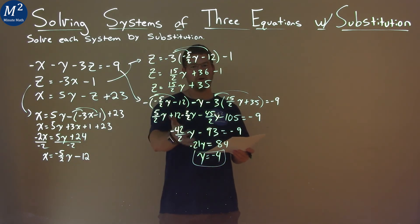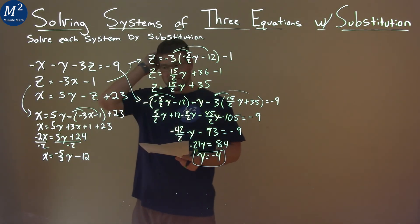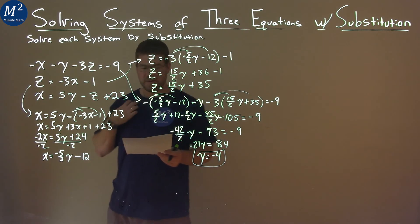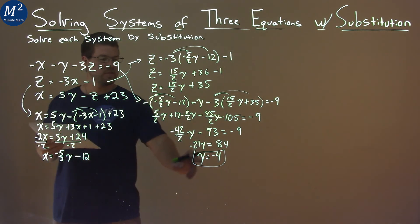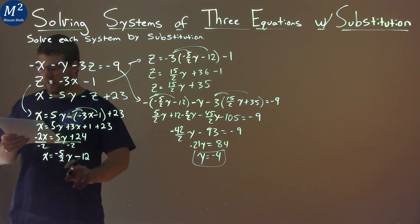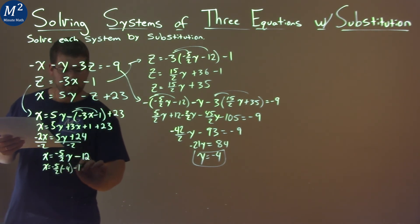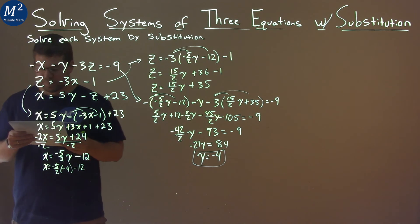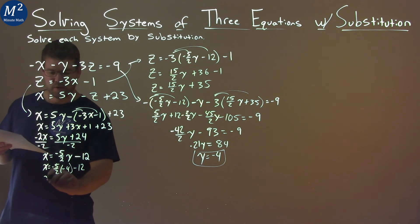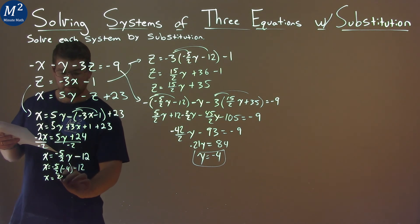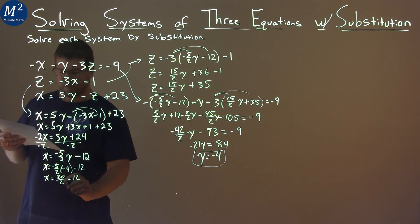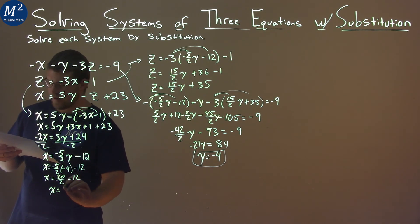After all that, we got one of our y values. But now this is actually the easy part. We can get our x values and z value here. So let's go with the x value first. Since y equals negative 4, we can take this equation that we simplified and put negative 4 in for y. So x equals negative 5 halves times negative 4 minus 12. And let's simplify. Negative 5 halves times negative 4 is positive 20 over 2 minus 12. And 20 over 2 is 10 minus 12. x equals negative 2 here.